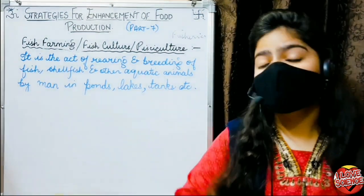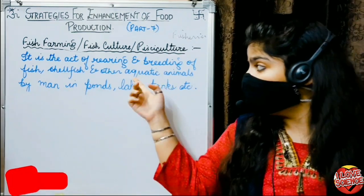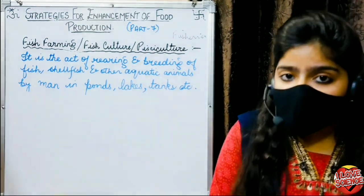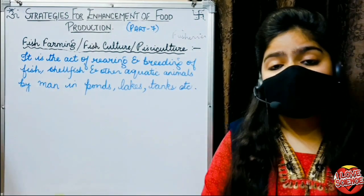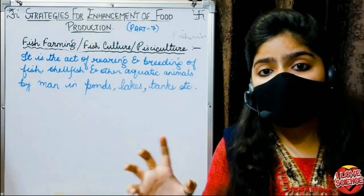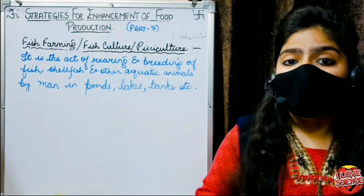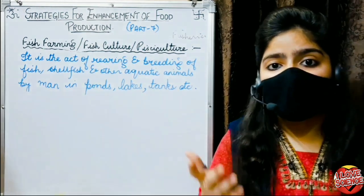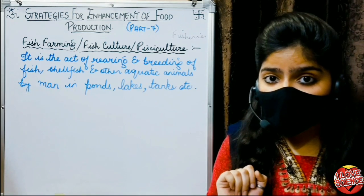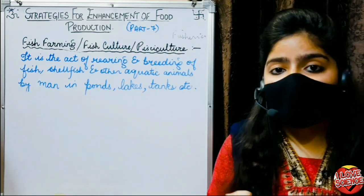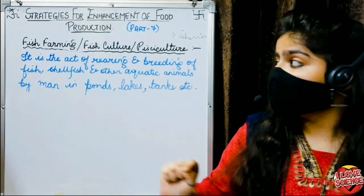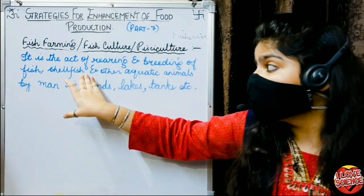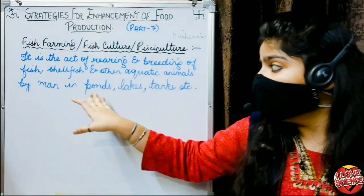So what happens in this? The fishes or the aquatic animals — which can be prawns, oysters, crabs, and any aquatic animals — we domesticate them so that we can get some meat from them. We can get fish, cod liver oil, because they are very nutritious and low in fat. The process involves care, rearing, and breeding — that is the simple definition of fish farming: it is the act of rearing and breeding of fish, shellfish, and other aquatic animals by man.